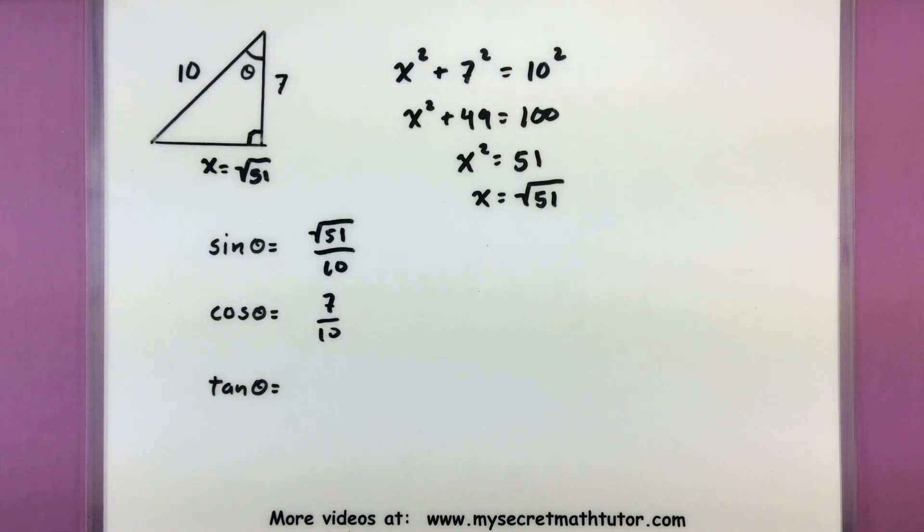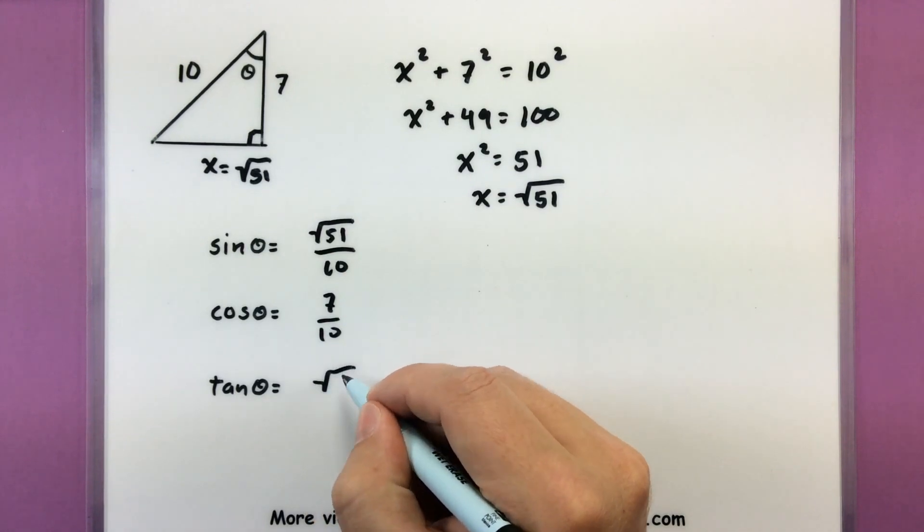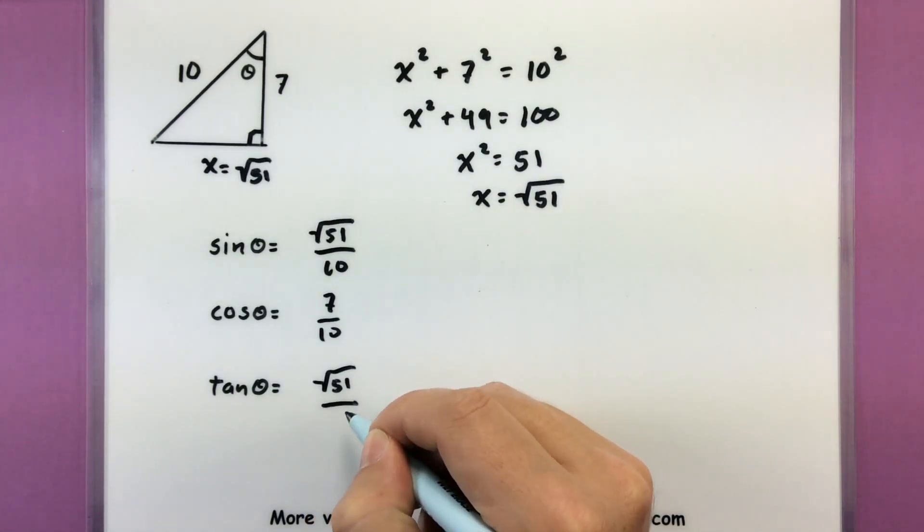And lastly, we need our tangent, which is opposite over adjacent. So square root of fifty-one all over seven.